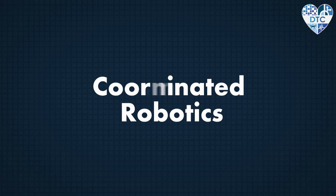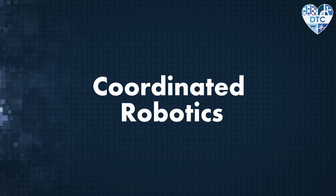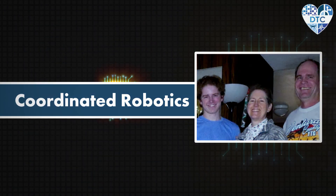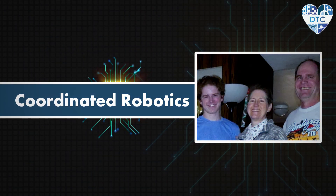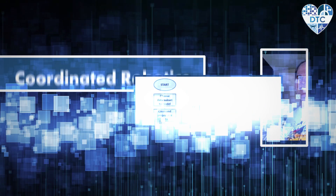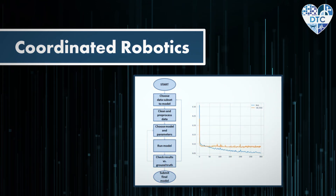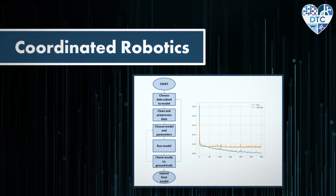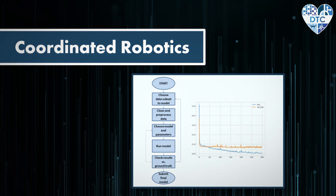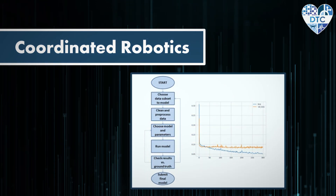Team Coordinated Robotics iterated a process of data selection, cleaning, modeling, and checking results against ground truth to refine their model.